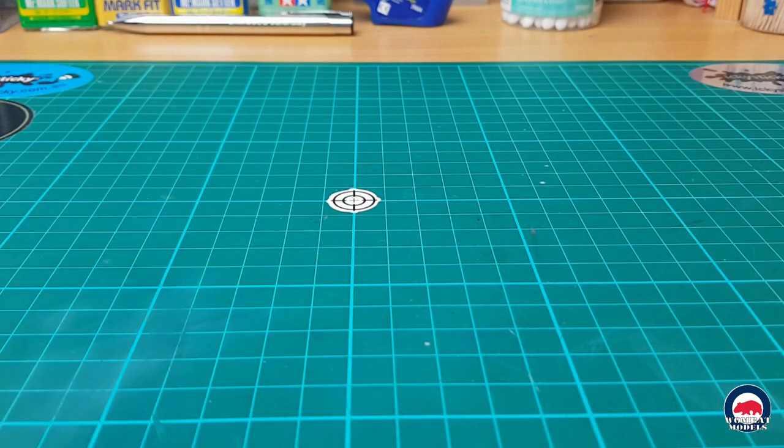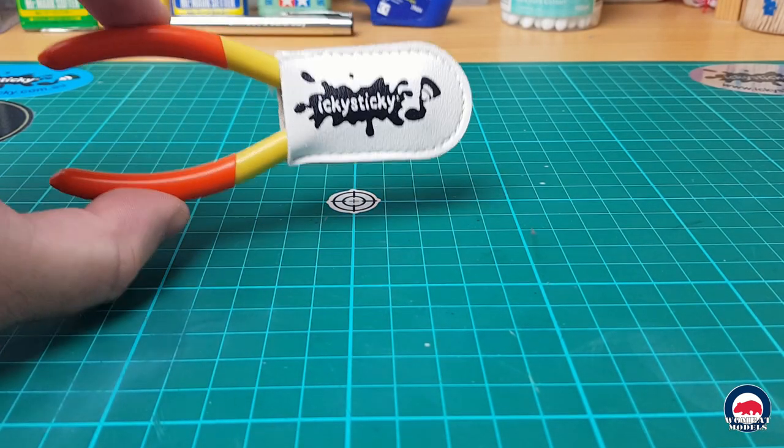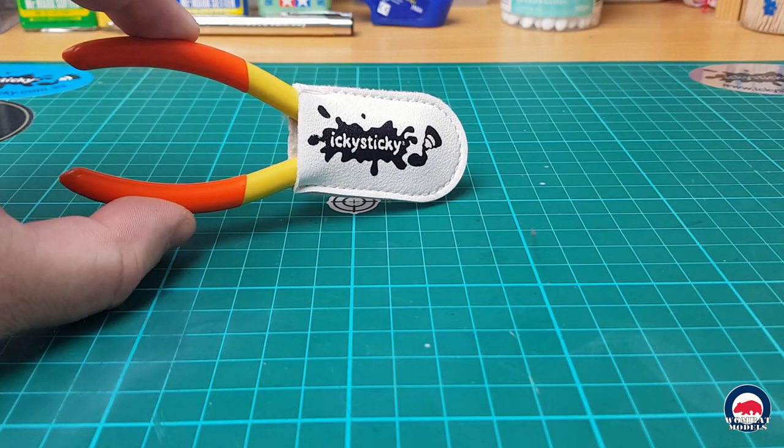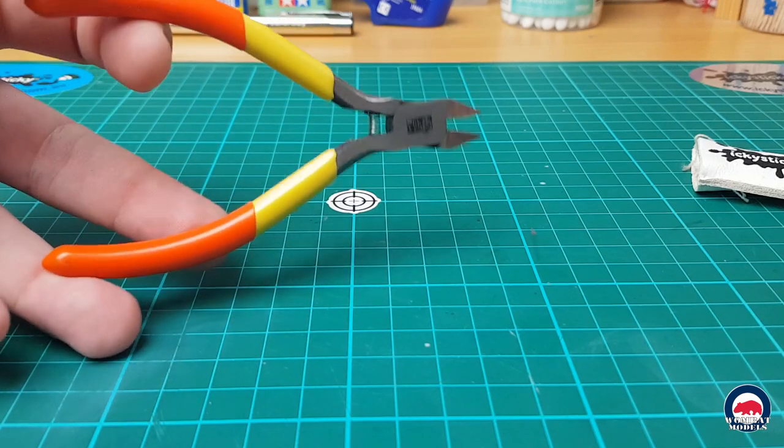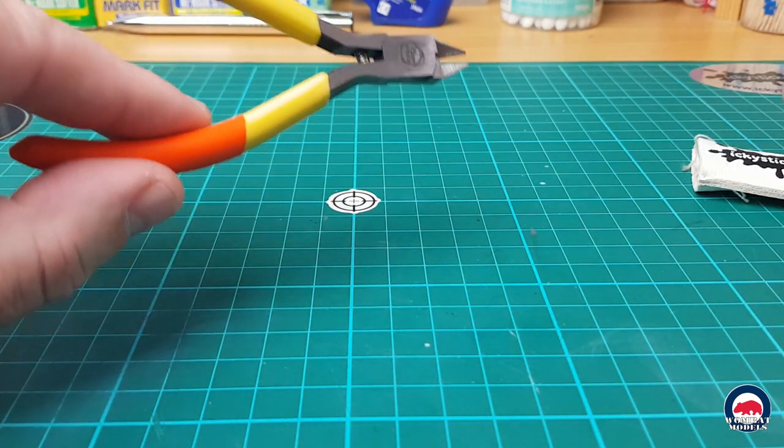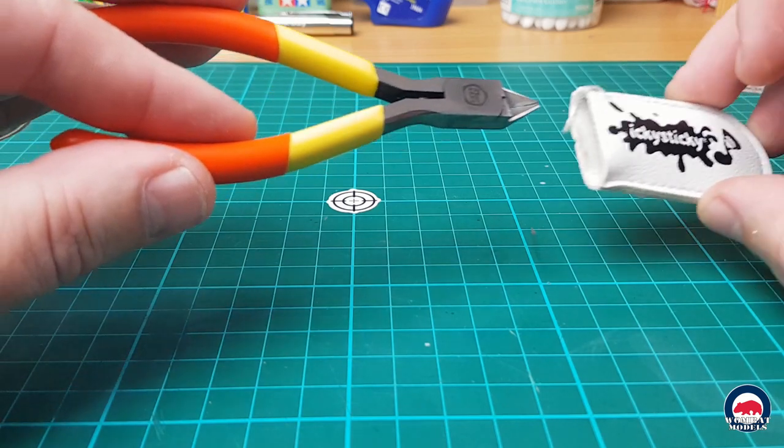So of course we have our A3 cutting mat, but we've also got our icky sticky single edge sprue cutters. So these come with a cover just to protect the blades. These are a really nice, clean cutting, well weighted set of nippers.